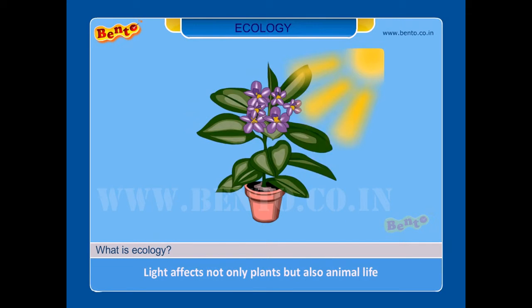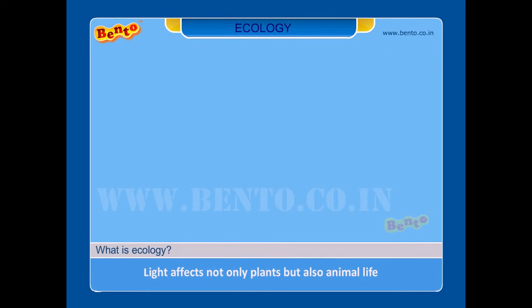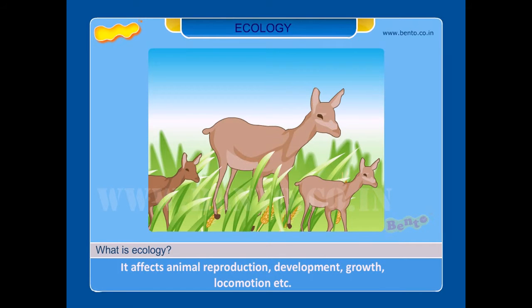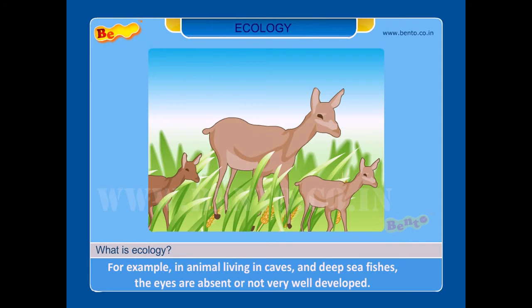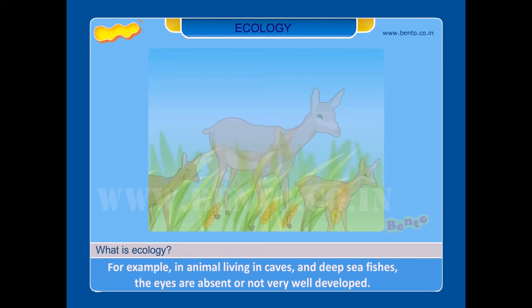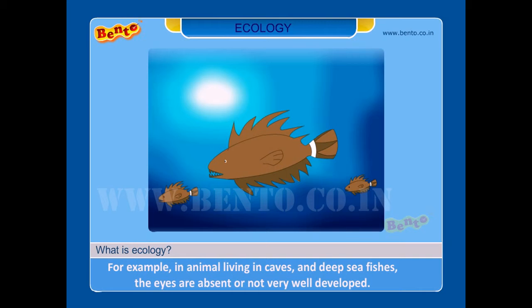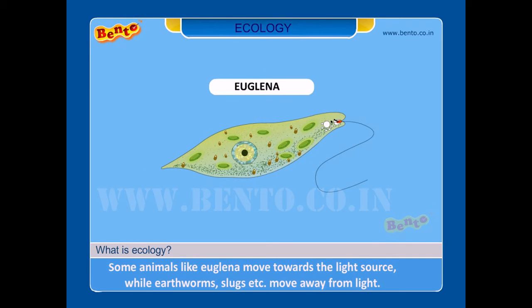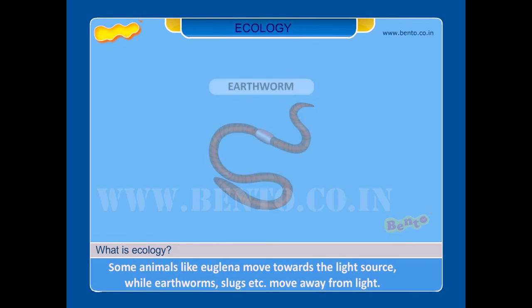Light affects not only plants but also animal life. It affects animal reproduction, development, growth, locomotion, etc. For example, in animals living in caves and deep sea fishes, the eyes are absent or not very well developed. Some animals like Euglena move towards the light source while earthworms, slugs, etc. move away from light.